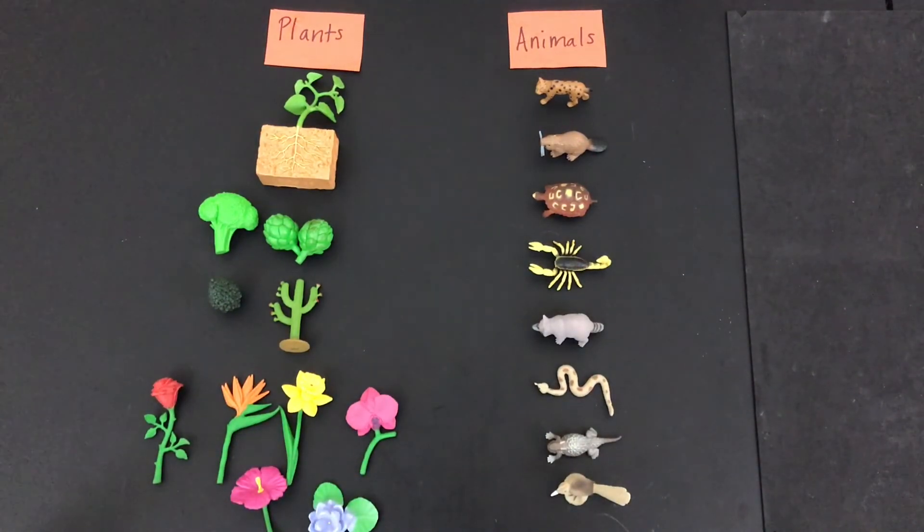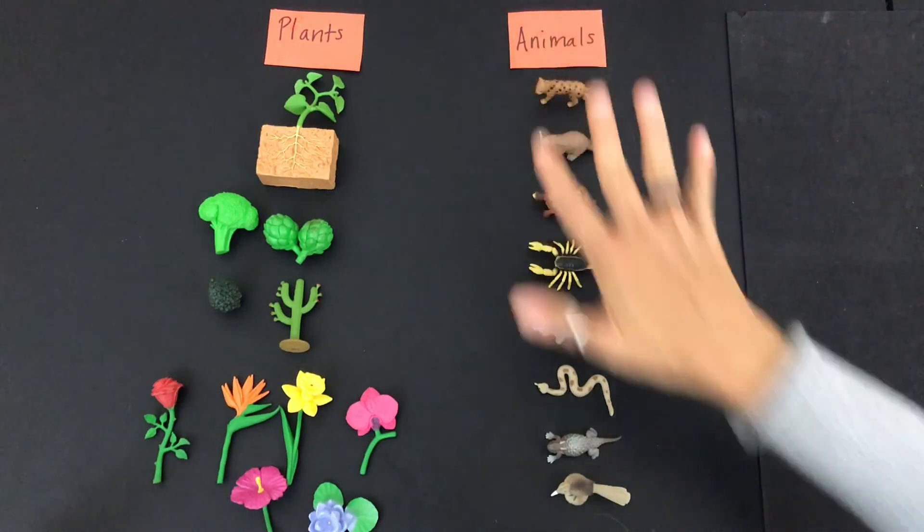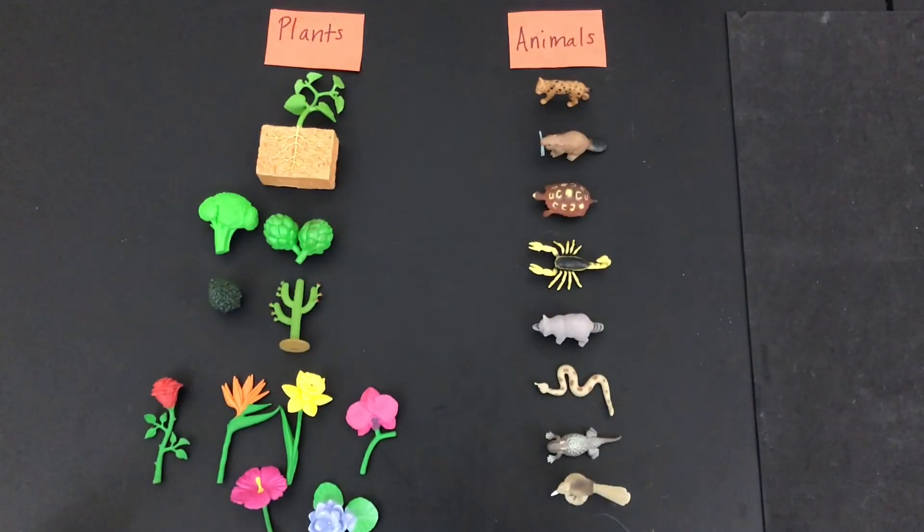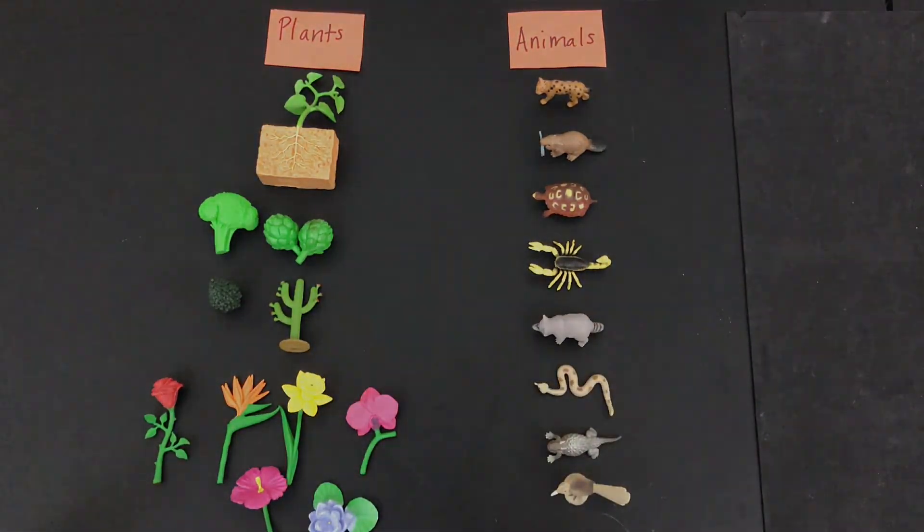So now you have your sort all the plants and all the animals and again you can either do this with objects around your house or outside or you can cut pictures out of magazines and sort them by plants or animals or you can use the activity in your activity packet this week to do this sort. Thank you for watching. Remember to like this video and subscribe to support our channel.